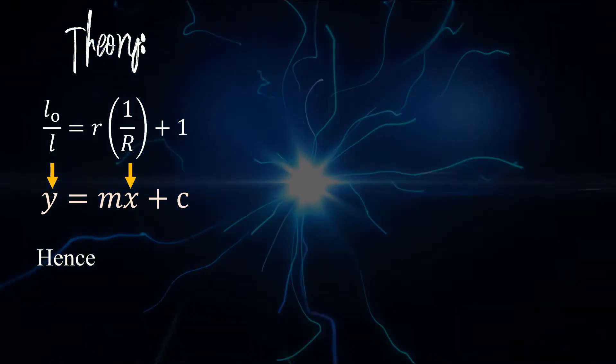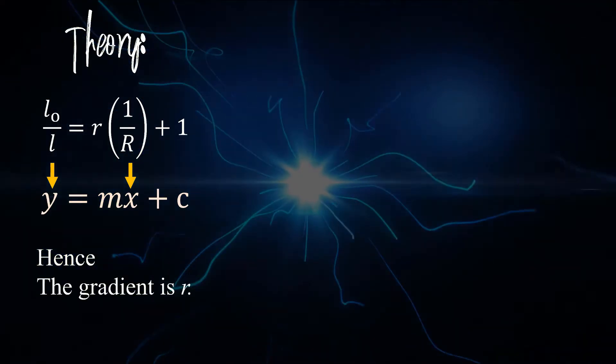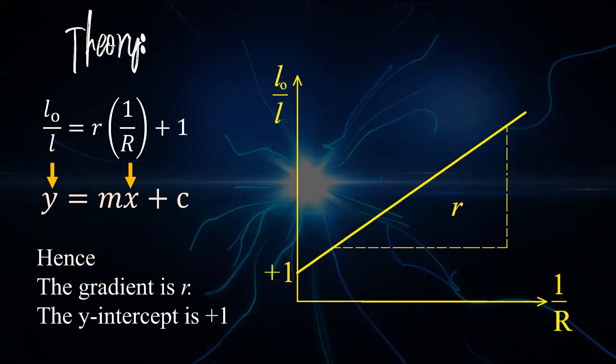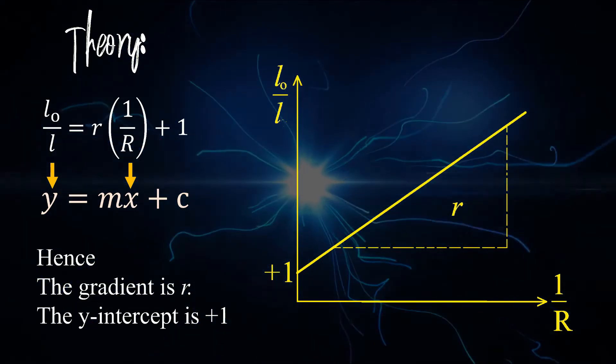Hence the gradient is the internal resistance that we want to find in this experiment. Theoretically, the y-intercept should be positive 1.